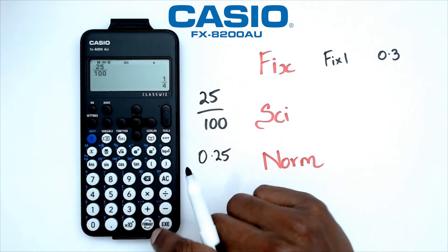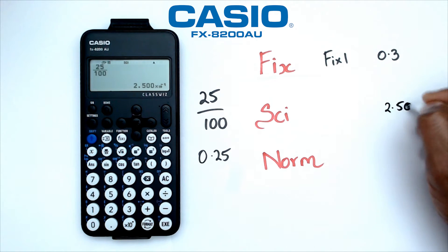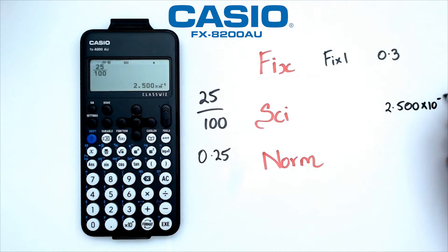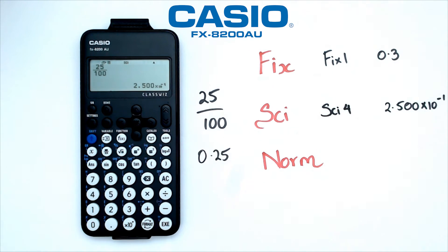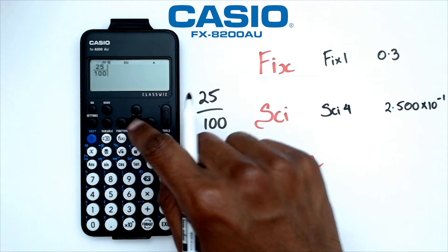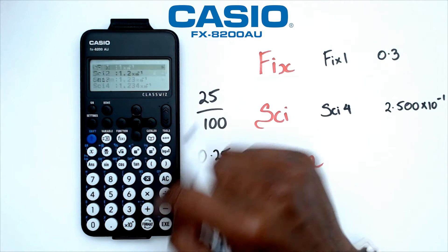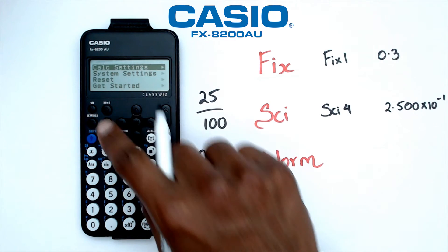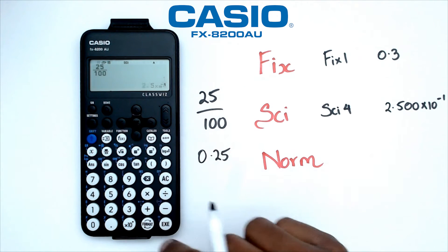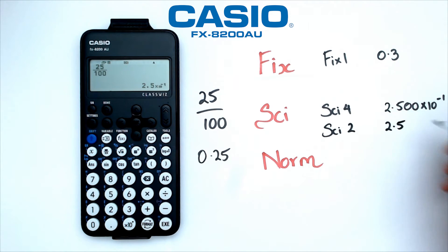So I'm going to go four significant figures. Let's go back and see what it does. We've got a quarter, and if I go shift EXE, that gives me 2.500 times 10 to the power of negative 1. That was SCI 4 mode. What if I try SCI 2? Going back, pressing equals — it's a quarter — and now with SCI 2, I'm getting 2.5 times 10 to the power of negative 1. So two significant figures there.